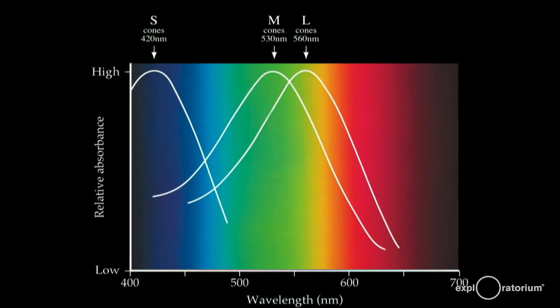In humans, there are three types of cones, each corresponding to a different range of colors. Here, they're labeled S for short wavelength, M for medium wavelength, and L for long wavelength.